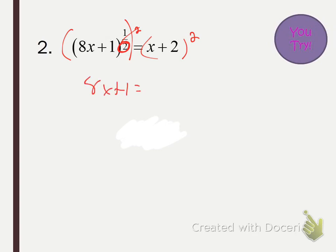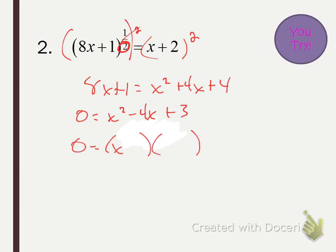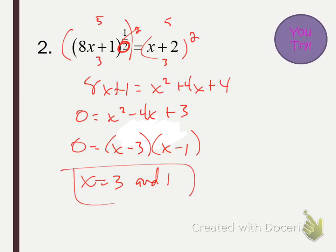Now square x plus 2 on the right using square, double, square. Subtract 8 and subtract 1 to get a quadratic, then factor. This factors into (x minus 3)(x minus 1), giving solutions of 3 and 1. Quick check: 8 times 3 is 24, plus 1 is 25, the square root of that is 5; plug in 3 on the right and you get 5 — good. For x equals 1: 8 times 1 is 8, plus 1 is 9, the square root of 9 is 3; 1 plus 2 is 3 — both solutions definitely work.